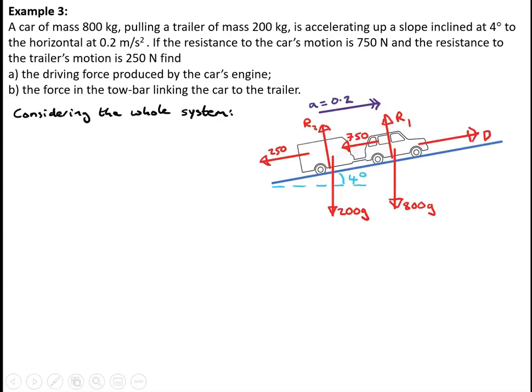In example three, we have a car of mass 800 kilograms pulling a trailer of mass 200 kilograms, accelerating up a slope inclined at 4 degrees to the horizontal at 0.2 meters per second squared. The resistance to the car's motion is 750 newtons and the resistance to the trailer's motion is 250 newtons. We have to find the driving force produced by the car's engine and the force in the towbar. Considering the whole system, the forces are: driving force, weight of the car, weight of the trailer, normal reactions, resistance of the car, and resistance of the trailer, with acceleration 0.2 meters per second squared.